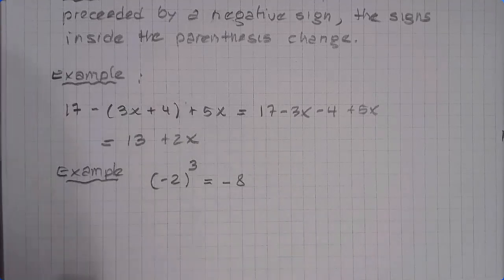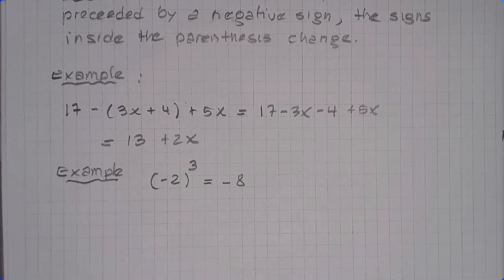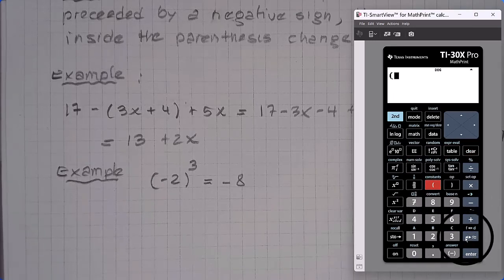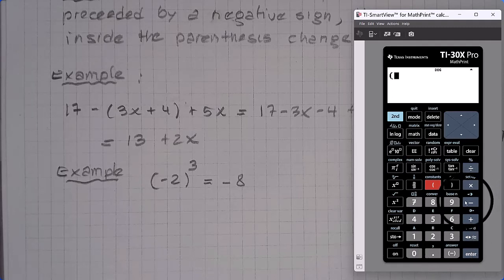You can test that with your calculator. Put in your calculator parenthesis negative 2. Oh, this is a good time to remind you the difference between this minus and that minus. This is a binary minus, which means it is used to subtract two things. One thing from another. This is a unary minus, which is used to put the negative sign to only one thing.